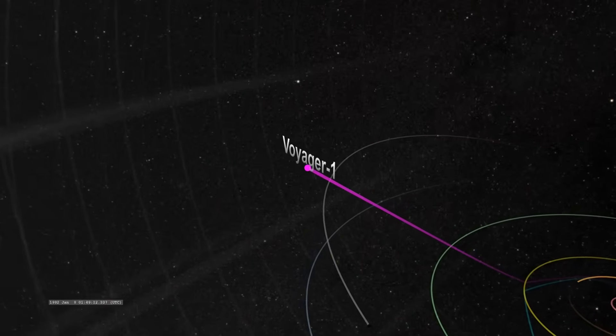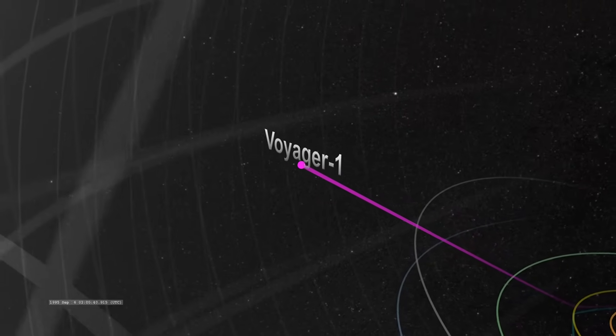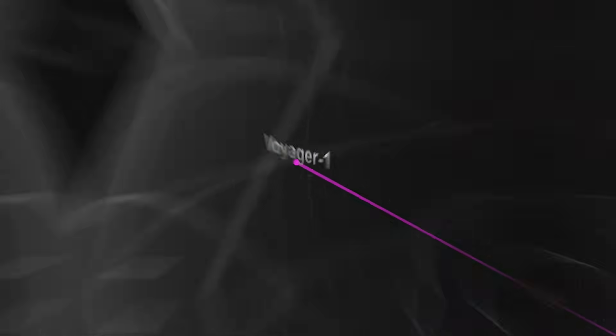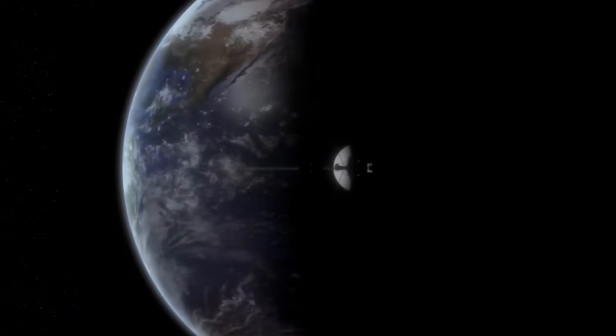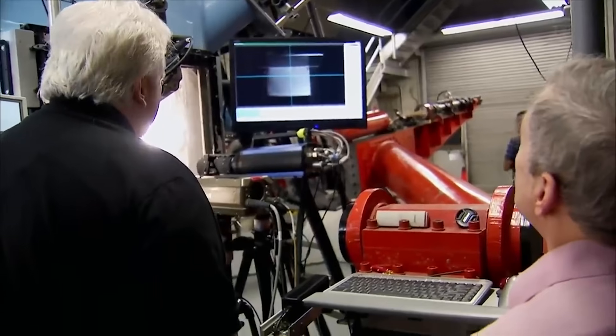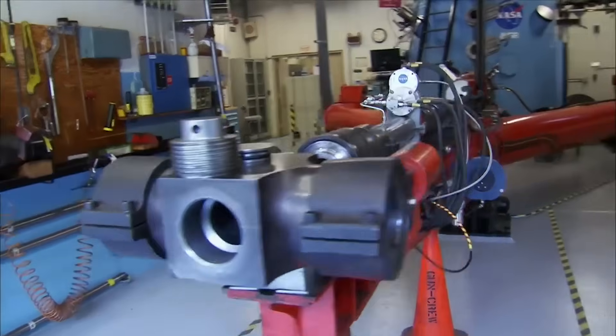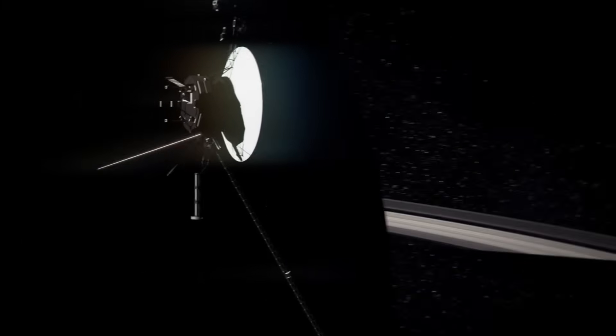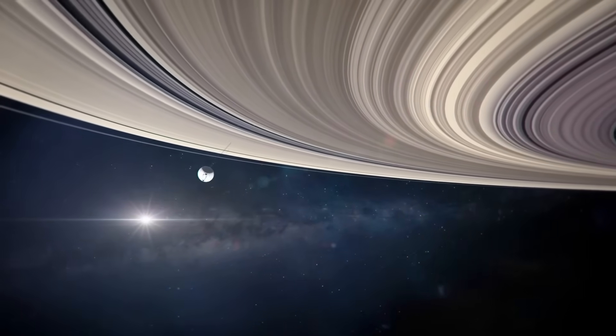More profoundly, Voyager's drift into the galaxy becomes a proof of concept for humanity's potential future, a future where probes might someday travel not just light hours or light days, but light years, carrying with them the technological descendants of Voyager's primitive systems. In this sense, Voyager is no longer just a machine. It is the first page of a blueprint, a rough sketch of what interstellar exploration will truly require.